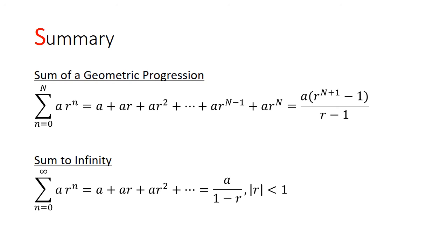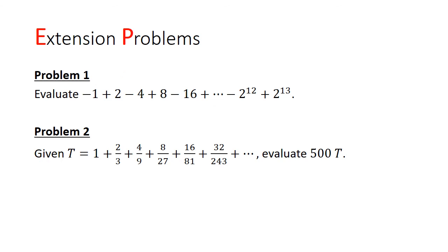And if we are going to sum this infinitely many times, the formula would be a over 1 minus r. This however assumes that the series is a converging sequence. This would happen if the common ratio is between minus 1 and 1.